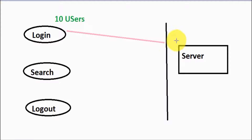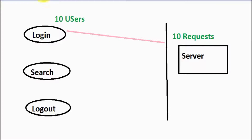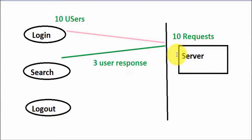The server got 10 requests. When the 10 users go to the server, the server is getting 10 requests. But the server was able to satisfy only three requests, so it responds to three users. In response, we are getting three user responses. The rest seven users are still in progress on the server side.